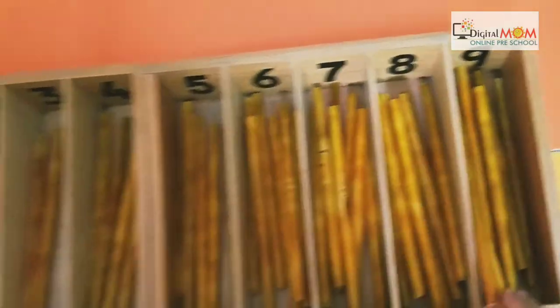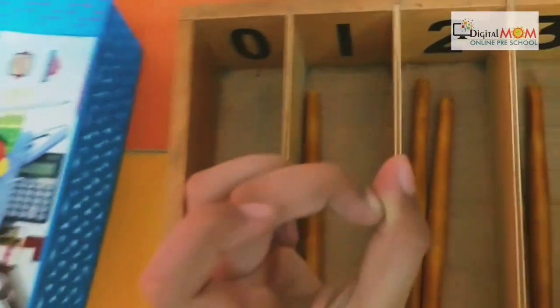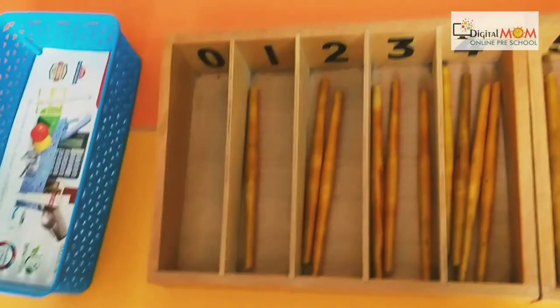Now, is any spindle left in the box? No. And is any box empty here? Yes. Which number is it? Zero. And what is the value of zero? Nothing. So we will put nothing in zero. That's great.